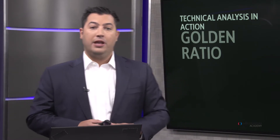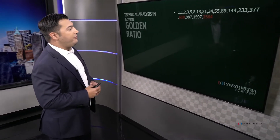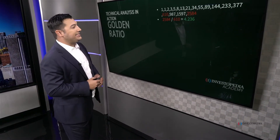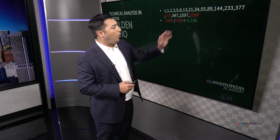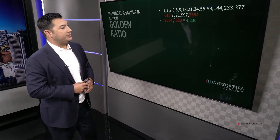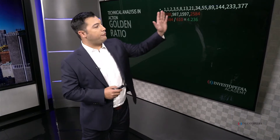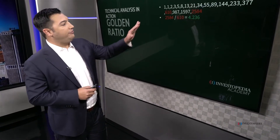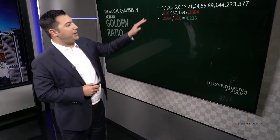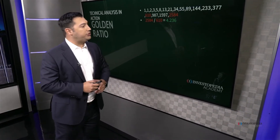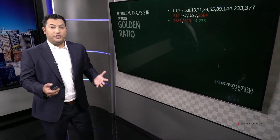Now that we've divided each of these Fibonacci numbers in the sequence by the numbers two spaces over to the left, let's take that one step further and divide by something three spaces to the left. Take 2584 and divide it by 610 — you get 4.236. The further away you get from zero along the sequence and divide a number by the one three spaces to the left, the closer you get to exactly 4.236. So how are you going to use this in the market?